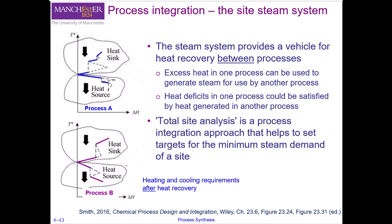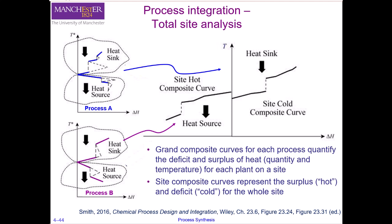We have considered heat recovery earlier in this section, where surplus heat is recovered and reused usually within the plant by nearby process units. Another way of recovering surplus heat is across a site — between different plants and different processes. So let's look at an example of site analysis. Here we have two processes, process A and process B, with their respective grand composite curves. We assume in this case that the pockets are cut-offs and we don't use these pockets for data extraction.